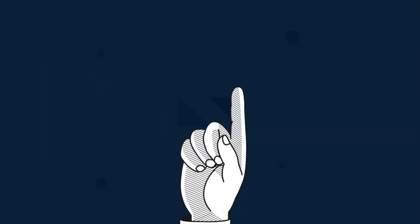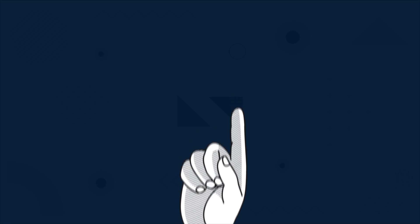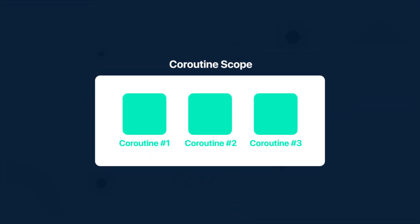The first thing you need to know is that every coroutine needs to run inside some scope, and we cannot run coroutines without a coroutine scope. Coroutine scope is a way to keep track of all coroutines that run inside it.